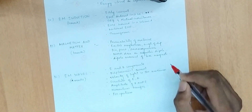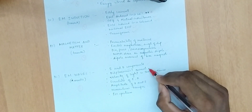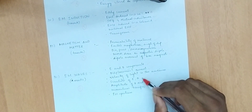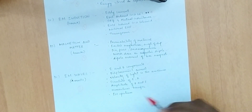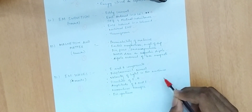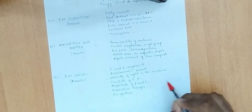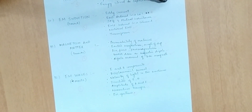For electromagnetic waves, topics include electric and magnetic field components, displacement current, velocity of light in a medium, direction and amplitude of electric and magnetic fields, momentum transfer, and the EM spectrum with its uses.